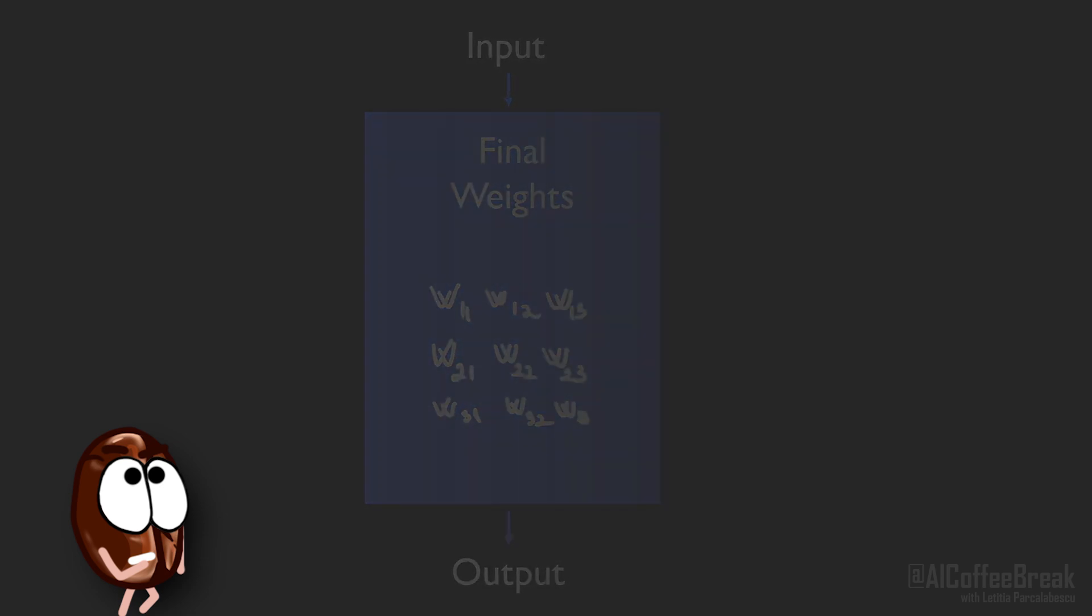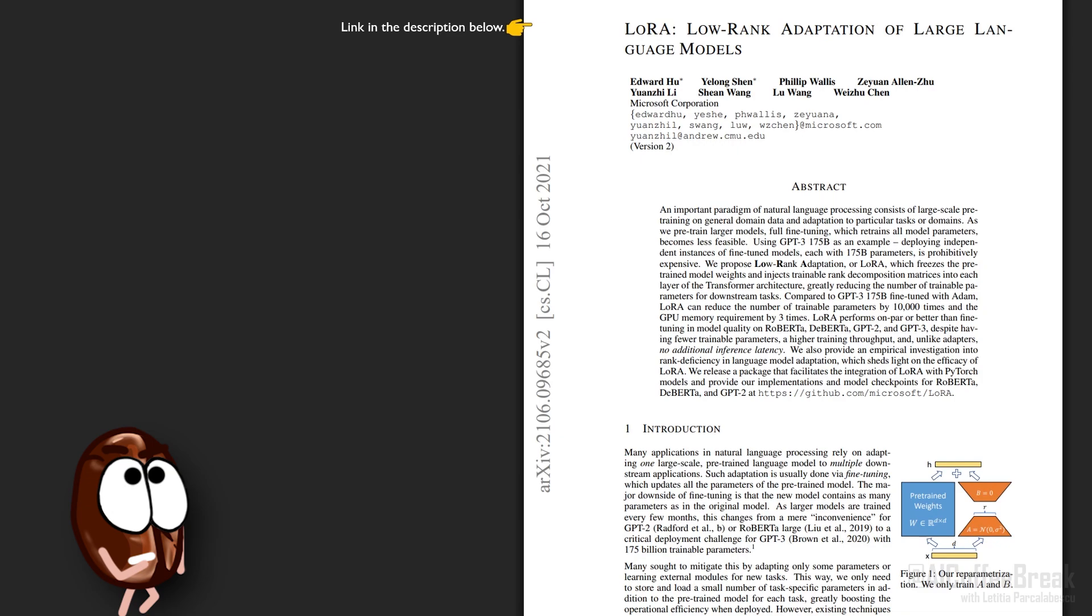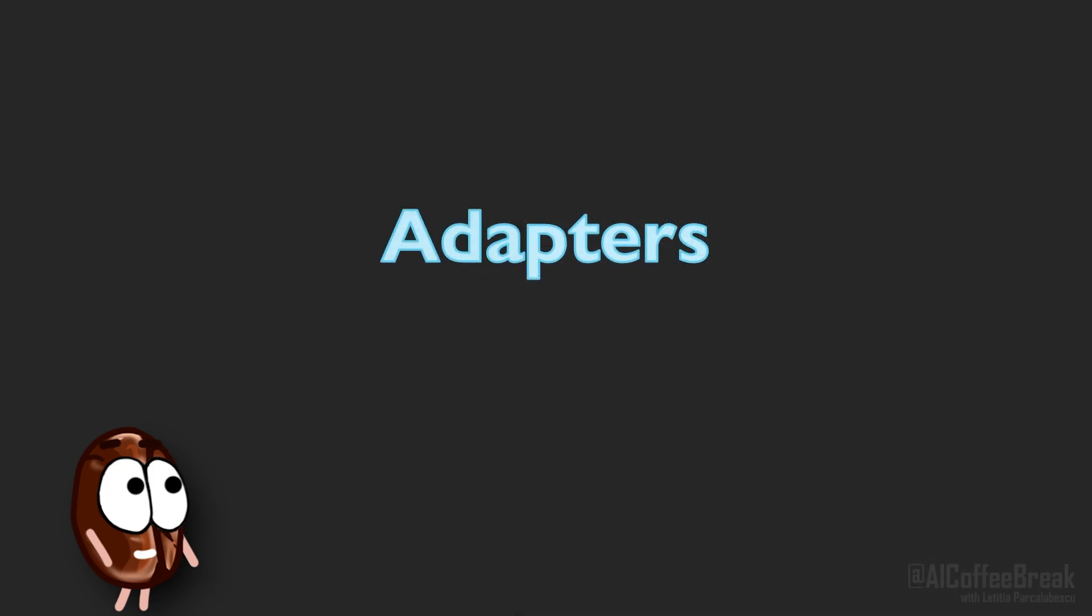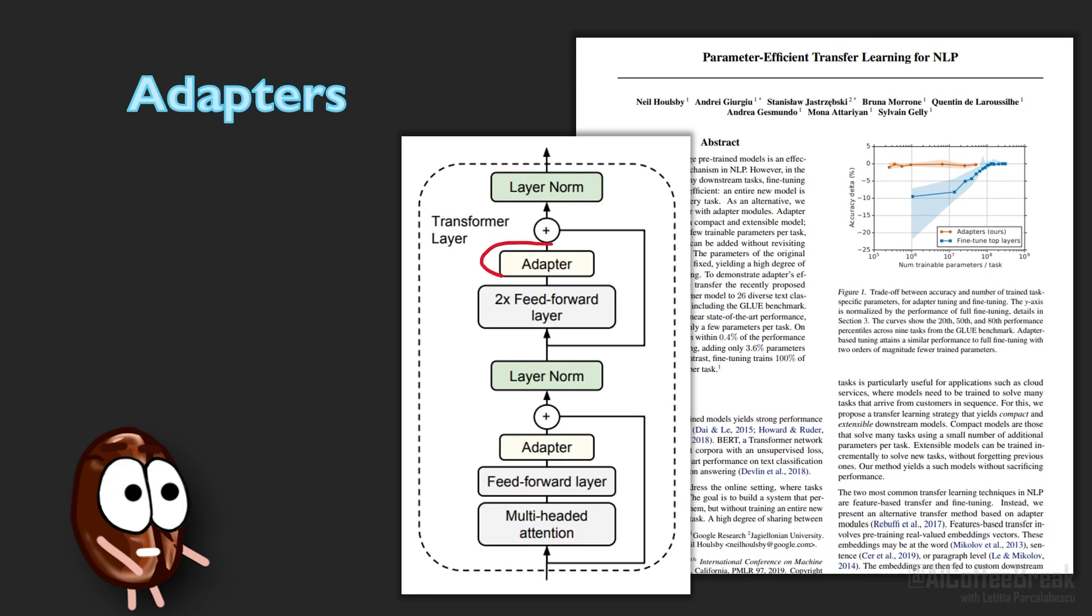But why choose LoRa and not other approaches that adapt models in a parameter and compute efficient way? One common alternative to LoRa is adding so-called adapter layers in each transformer block. During fine-tuning we only adapt these parameters of these layers and leave the rest unchanged. Since these adapter layers have very few parameters, even as few as 1% of the transformers feed forward layers, it means that during training it is very compute efficient.